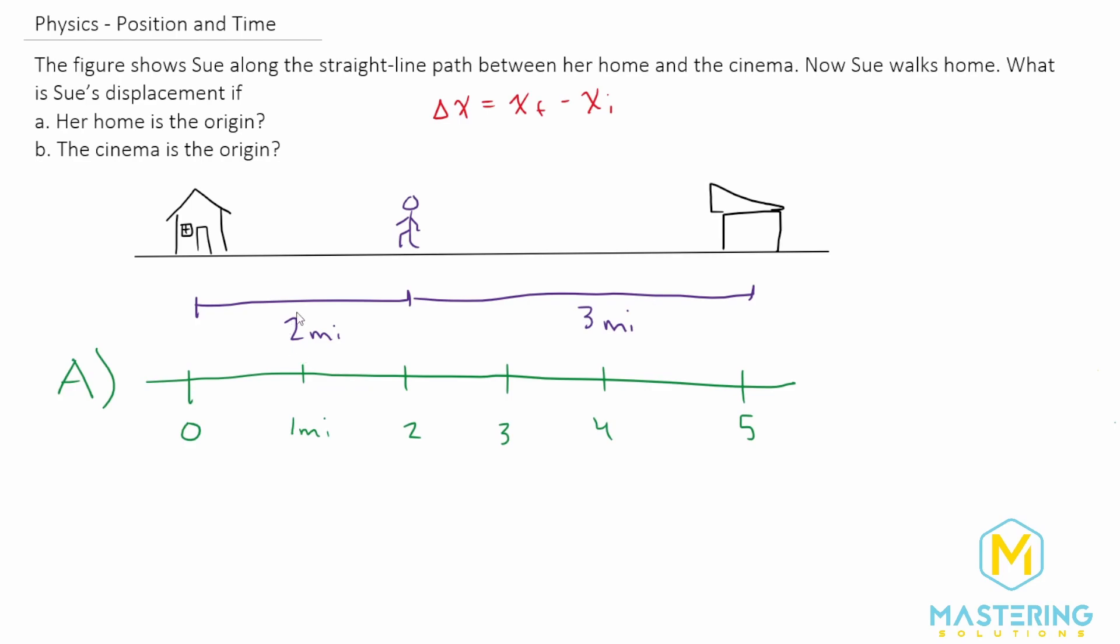So delta x, displacement, x final minus x initial. So if we say that she walks home, so where she starts out for part A, her x initial is at two. So her x initial is two miles.